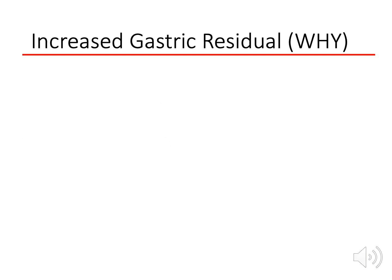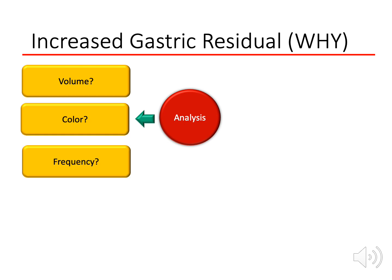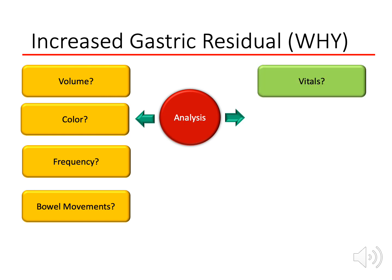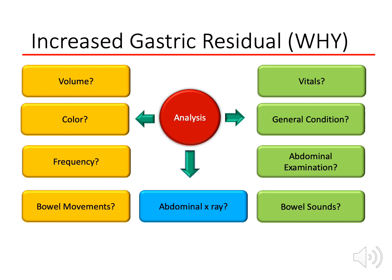A patient might present with vomiting or gastric residual. Ask why. Analyze: what is the volume of the gastric residual? What color — bilious or non-bilious? What is the frequency — every feeding or once a day? Is the bowel open, to help rule out obstruction? Are the vitals normal? Is the baby hypotensive or tachycardic, possibly septic? How is the general condition? Is the abdomen soft or distended? Are bowel sounds present or silent? What did the last X-ray show?